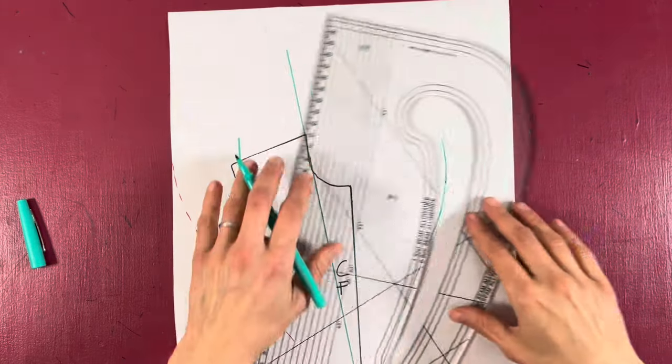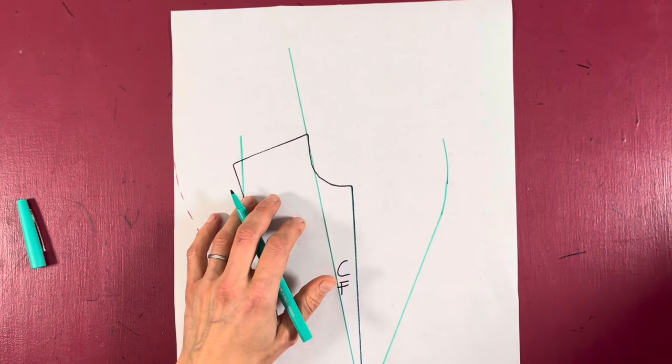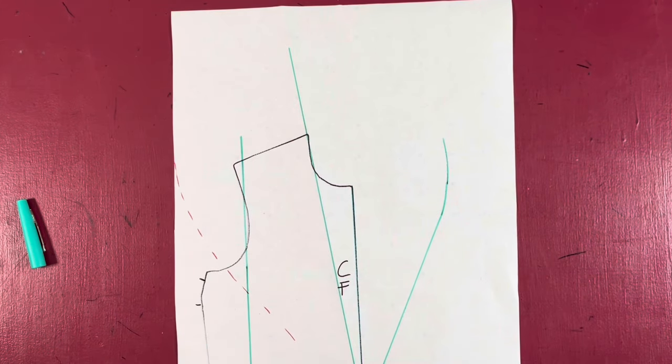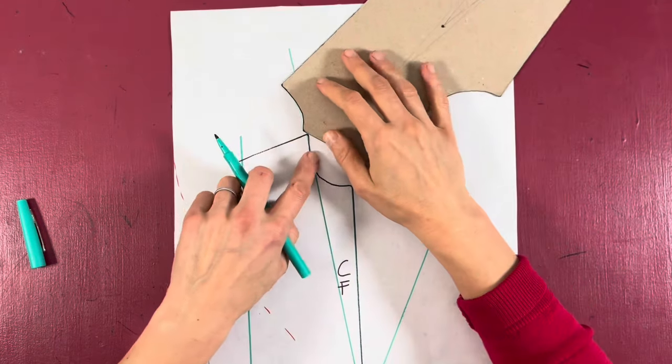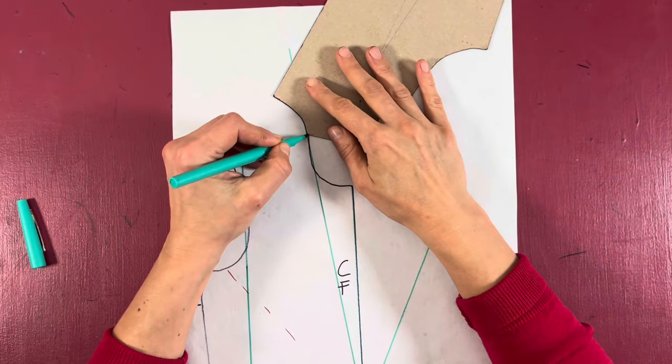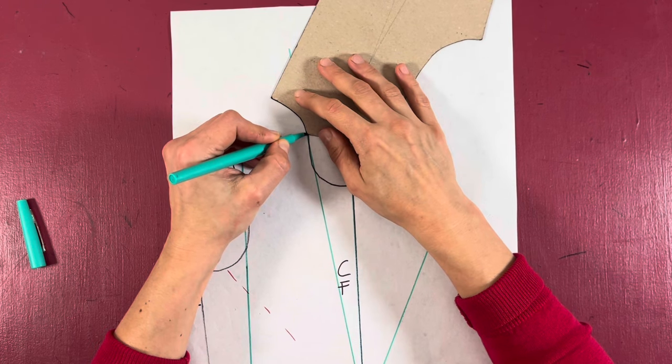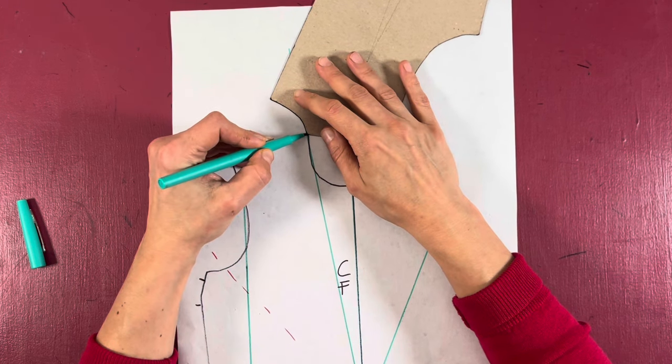Like this. The next thing, of course, is to draw in our back neck, as we would do for any shawl collar. I'm using my neck block to draw mine in like this. For a more in-depth tutorial, you can of